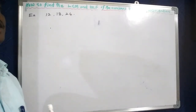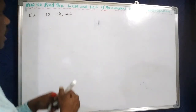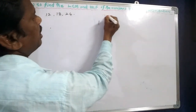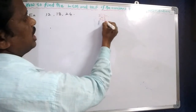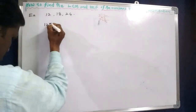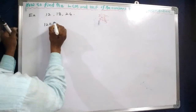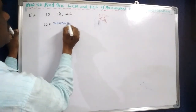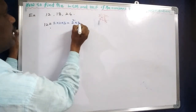Every composite number can be written as a product of primes by the fundamental theorem. Here, 12 can be written as 2 sixes, or 2 threes — so 12 is equal to 2 into 2 into 3, expressed in exponential form as 2 squared into 3 to the power of 1.